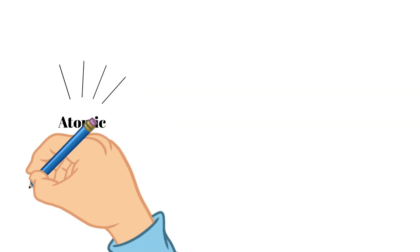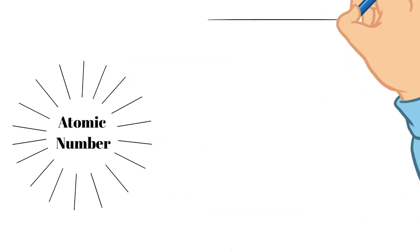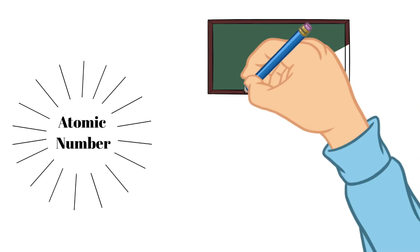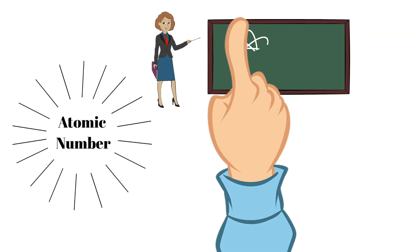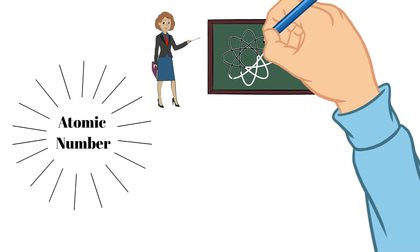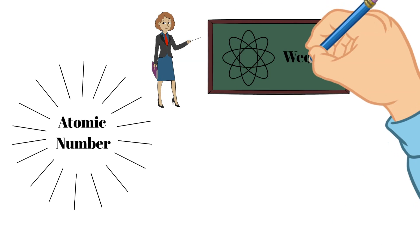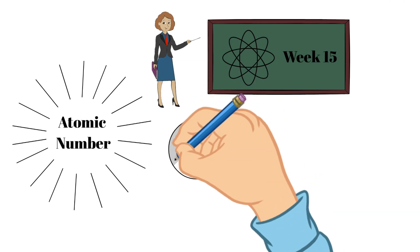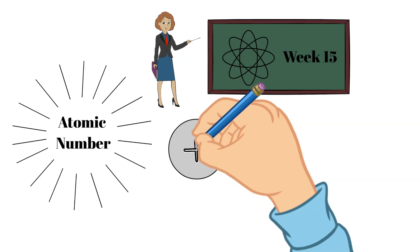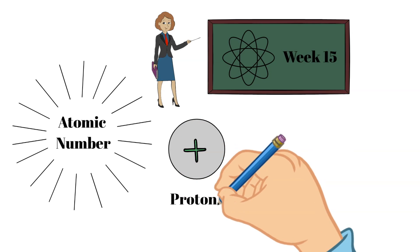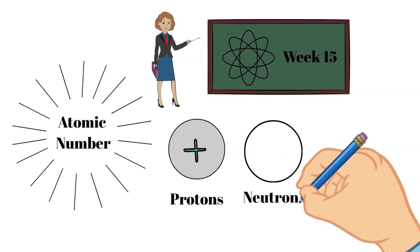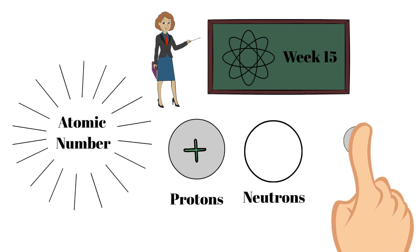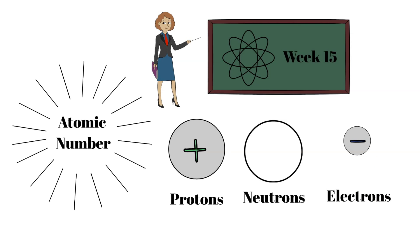To understand the atomic number, we must understand the components of the atom first. Now we will be diving into these different components in an in-depth sense in the Week 15 video, so I'm only going to broadly describe them so you can understand the purpose of the atomic number in this video. So generally speaking, an atom is made up of protons, which are positively charged particles, neutrons, which are particles that have no charge, and electrons, which are negatively charged particles.